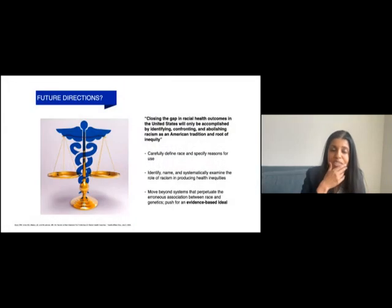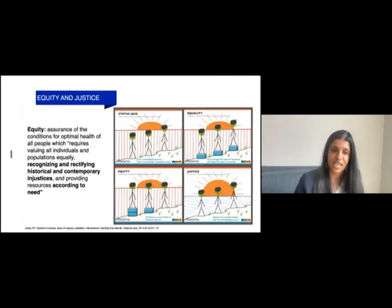What is the future of kidney health research and how do we achieve equity and justice? I love this Health Affairs paper which sums up the urgency of dismantling racism and calls us to do three things: define race and specify reasons for its use; name and examine the role of racism in producing health inequities; and move beyond systems that perpetuate erroneous association between race and genetics, pushing for an evidence-based ideal.